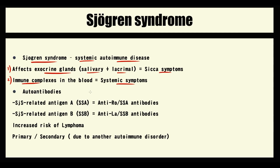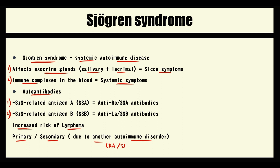Sjögren's syndrome is characterized by production of two major antibodies: Sjögren's syndrome-related antigen A antibodies, also called anti-Ro antibodies, and antigen B antibodies, also called anti-La antibodies. Patients with Sjögren's syndrome have an increased risk of non-Hodgkin lymphoma. Also, Sjögren's syndrome can develop by itself — we call this primary Sjögren's syndrome — or it can be secondary Sjögren's syndrome due to another autoimmune disorder such as rheumatoid arthritis or lupus.